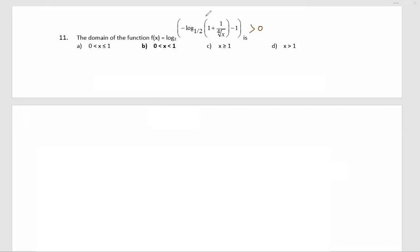That is this part, log of half base this one, minus log of half base this one. Minus log of half base one plus one upon fourth root of x should be greater than one.